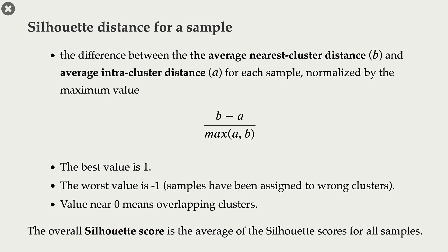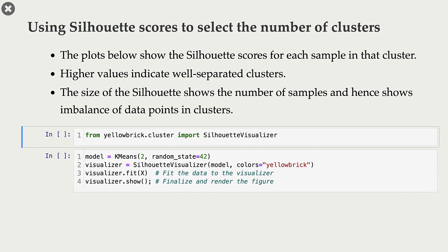We calculate the silhouette score for each sample as the difference between the average nearest cluster distance and the average intra-cluster distance, normalized. Since it's normalized, the best value is 1, the worst is -1, and a value near 0 means we have many overlapping clusters. The overall silhouette score is the average of silhouette scores for all samples.